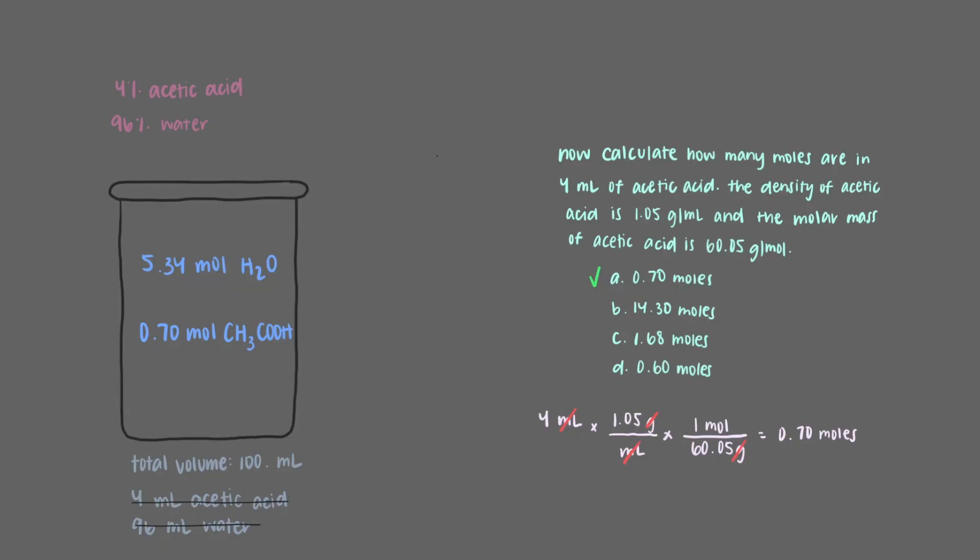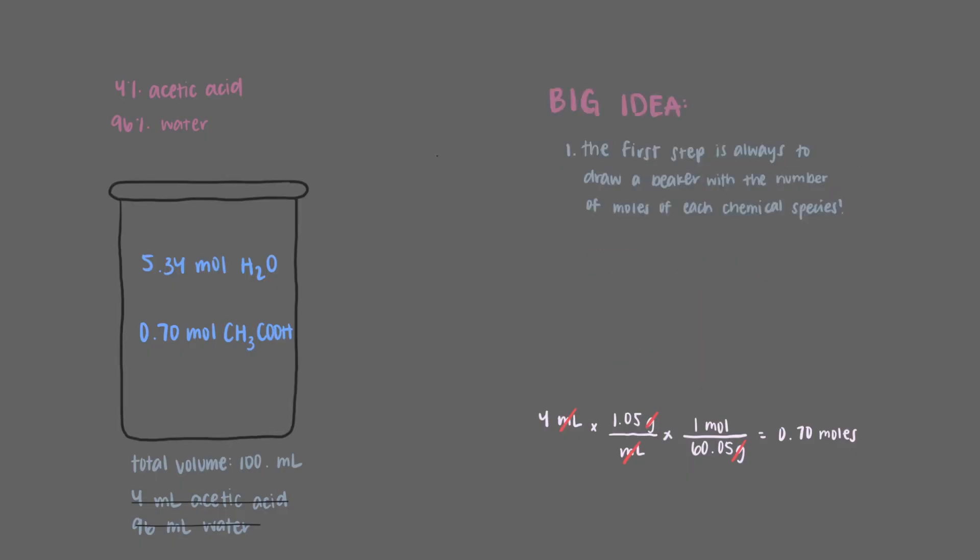The total volume of the solution in the beaker is 100 milliliters, and we're now ready to solve any problem that comes our way. In this video, we practiced drawing beakers with moles of each species based on the volume of pure liquids added. Like all problems, the first step is always drawing a beaker with the number of moles of each chemical species.